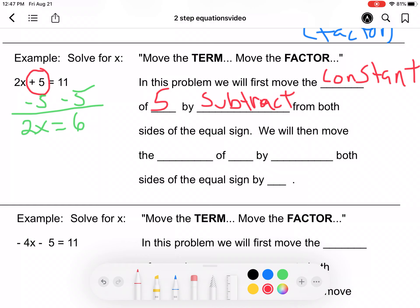We will then move the coefficient or the factor, and I'm going to abbreviate this. And the coefficient is 2 by, well, 2 times x is equal to 6. So the inverse of multiplication is division.